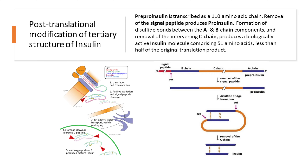One good example is the hormone insulin. At first, pre-proinsulin is translated as a 110 amino acid chain. Removal of the signal peptide produces proinsulin. Formation of disulfide bonds between the A and B chain components, and removal of the intervening C chain, produces a biologically active insulin molecule comprising 51 amino acids — less than half of the original translation product.